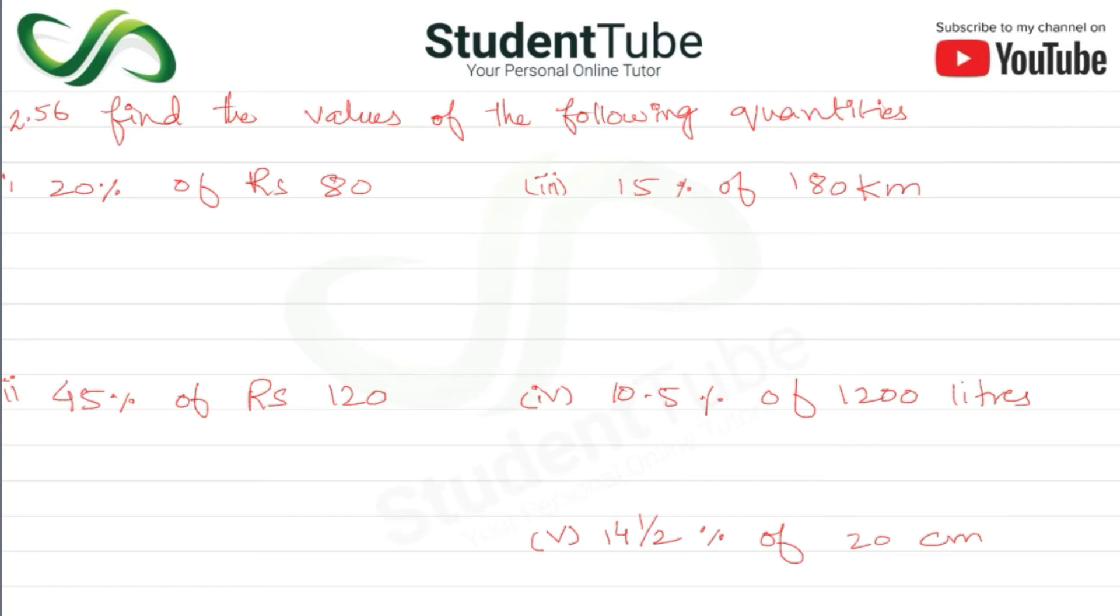Find the values of the following quantities. Number 1 is 20% of 80. It is very simple, you have to write here 20% of 80 is equal to 20 multiplied by 80 divided by 100. The answer is 16 rupees.